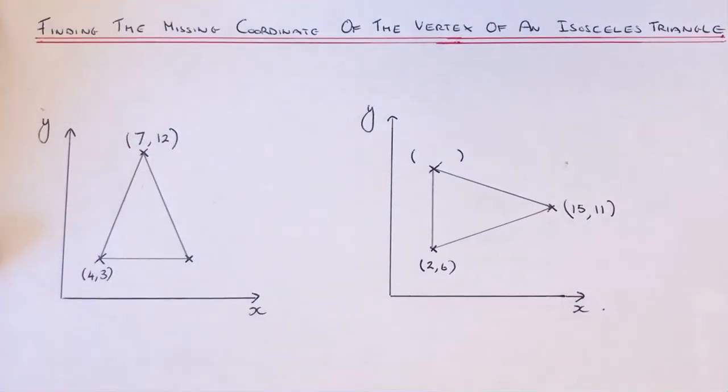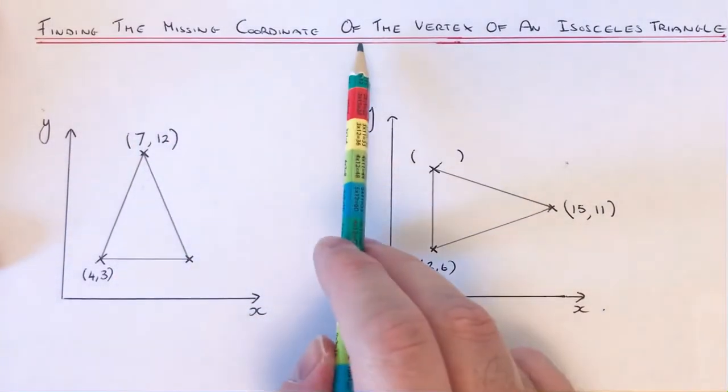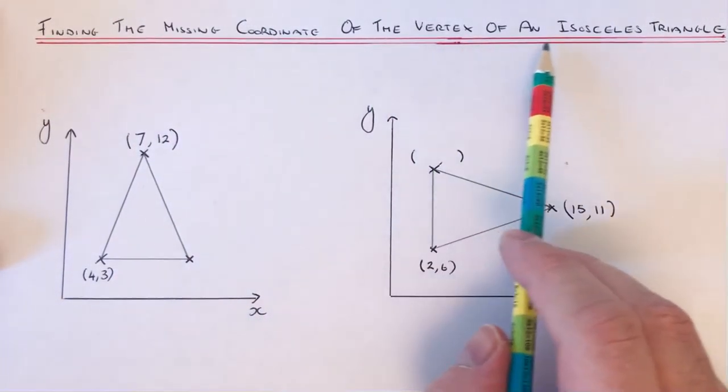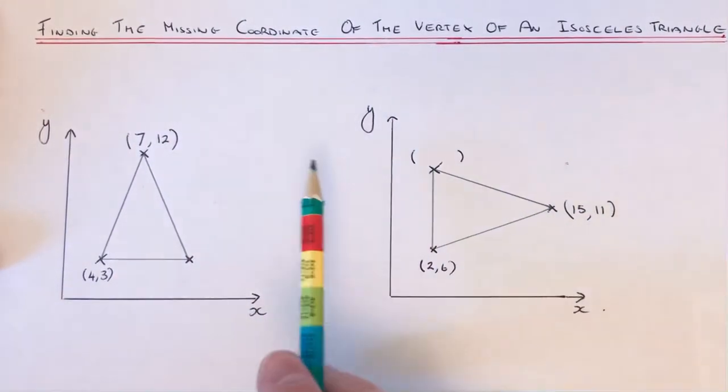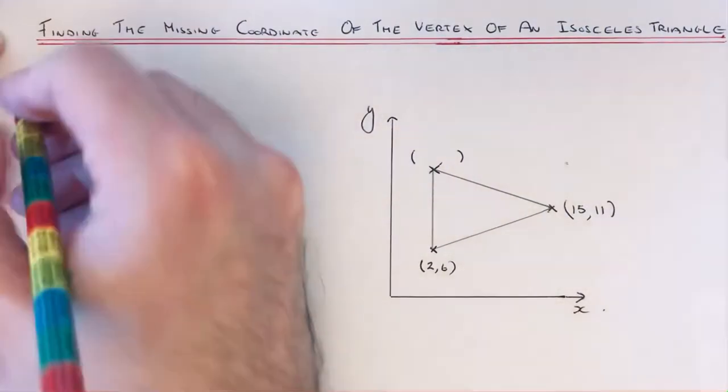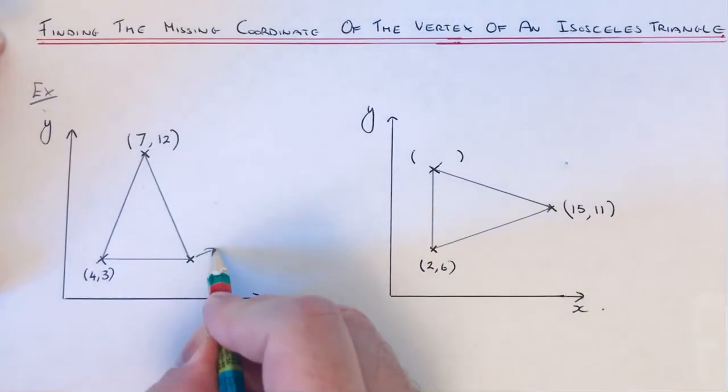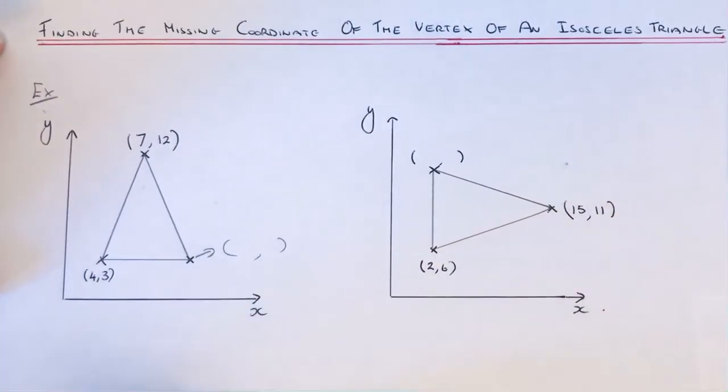Hi guys, welcome back. This is Maths 3000. Today I'm going to show you how to find the missing coordinates of a vertex of an isosceles triangle. Let's have a look at our first example. We've got to work out what this coordinate is here.